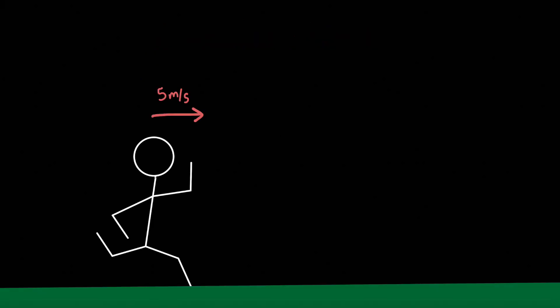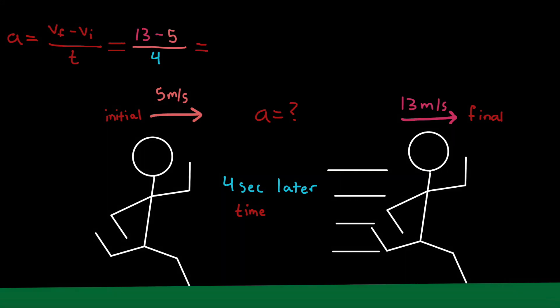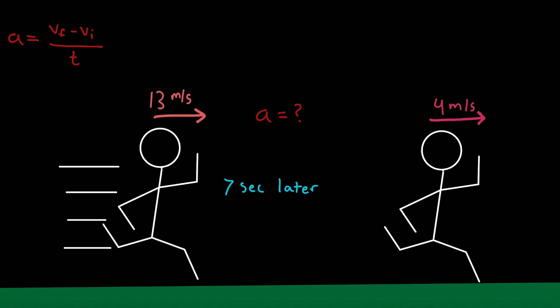For example, a person started running at a velocity of 5 meters per second, and then 4 seconds later ran at 13 meters per second. To find their average acceleration, we identify: final velocity is 13 m/s, initial velocity is 5 m/s, and time is 4 seconds. Following the formula — final velocity minus initial velocity divided by time — we subtract 13 by 5 and divide by 4 to get 2 meters per second squared.